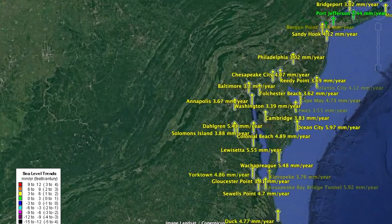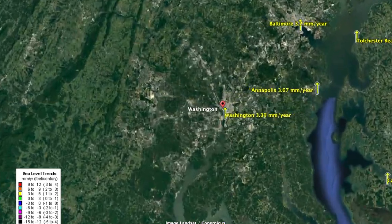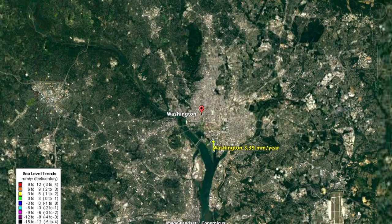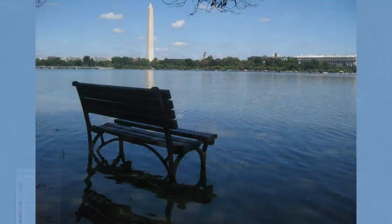Let's go to Washington, D.C. The tide gauge here, near the Tidal Basin and the Memorial to Thomas Jefferson, tells us that sea level is rising just over three millimeters per year.